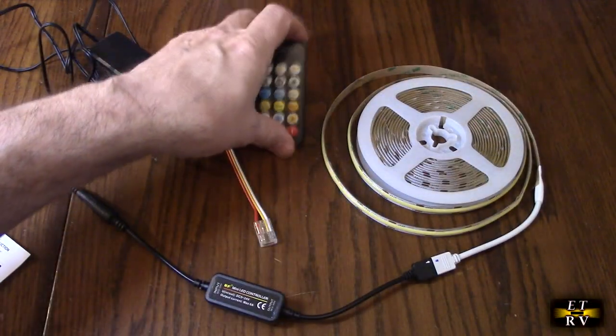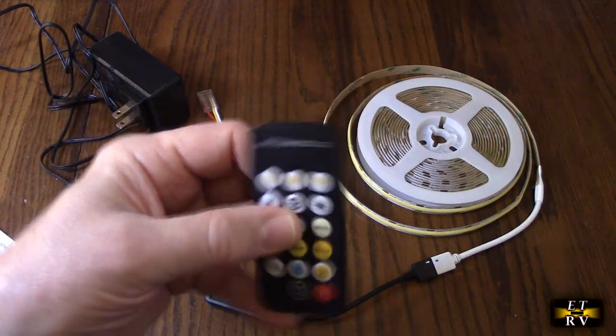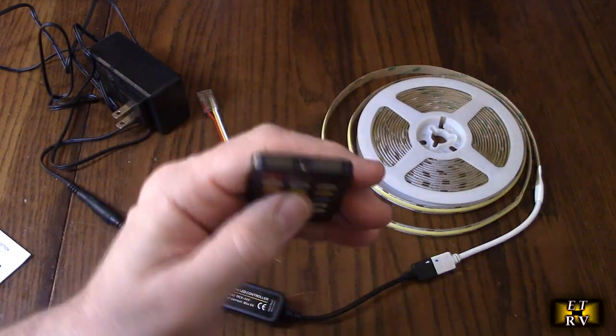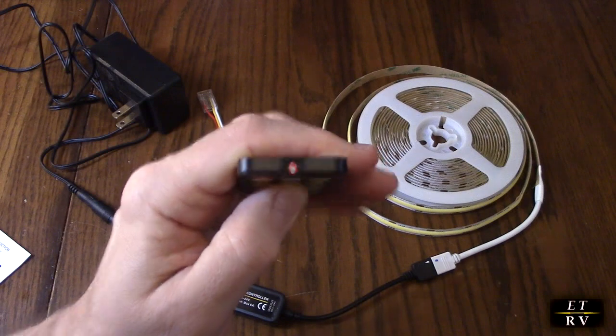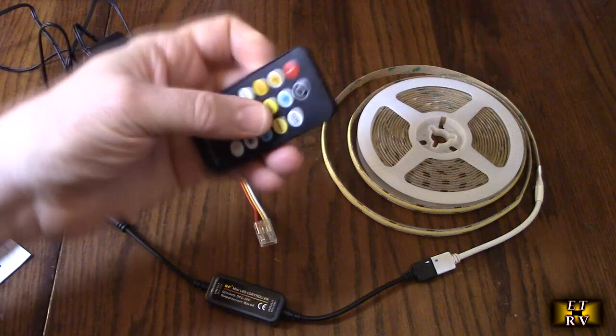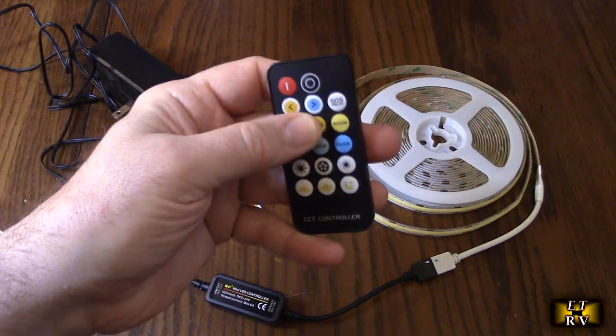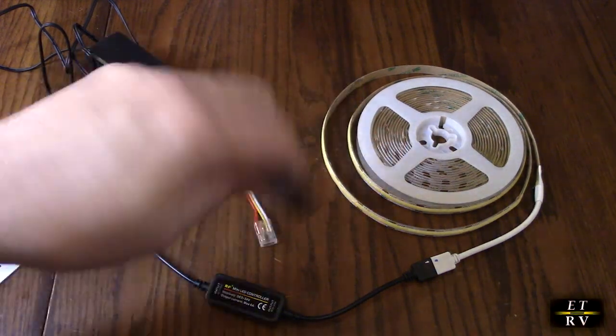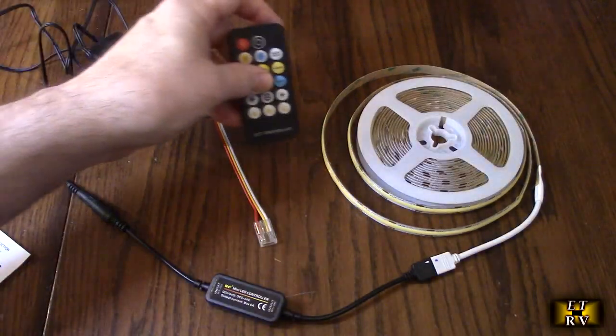Now what's unique about this and I really like is that this controller here, if you look and you hit a button you see the little red. This is a radio control button so you don't have to point it at the receiver. This can be anywhere within like 20 feet and you don't have to point it because it's a radio signal. That's nice.